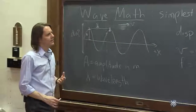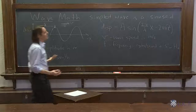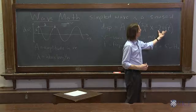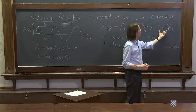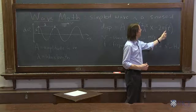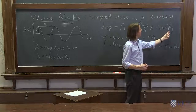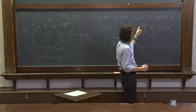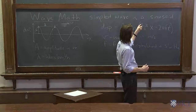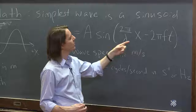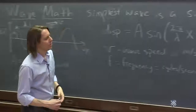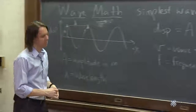You can see in the equation that frequency f is multiplied by t, and the spatial frequency — how many cycles per meter — is multiplied by x. So they appear roughly where you'd expect them.